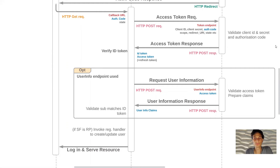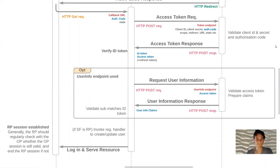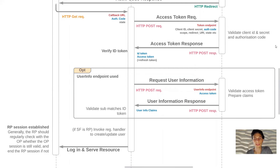Finally, after the relying party has confirmed the user should be logged in and is authorized to access the resource - checking things like whether the account is disabled - the resource is served back to the browser. This is also the point where the session within the relying party is established. A nuance of the OpenID Connect spec is that the relying party session should be checked on a regular basis - typically every 15 minutes - reconfirming the session at the OpenID Connect provider, which sets a cookie to establish the user's session.